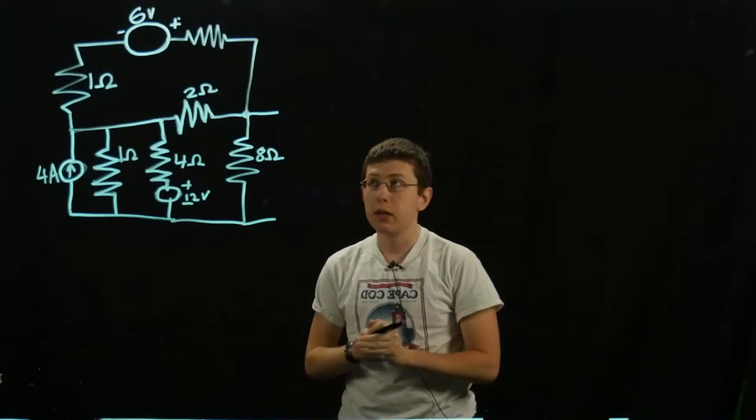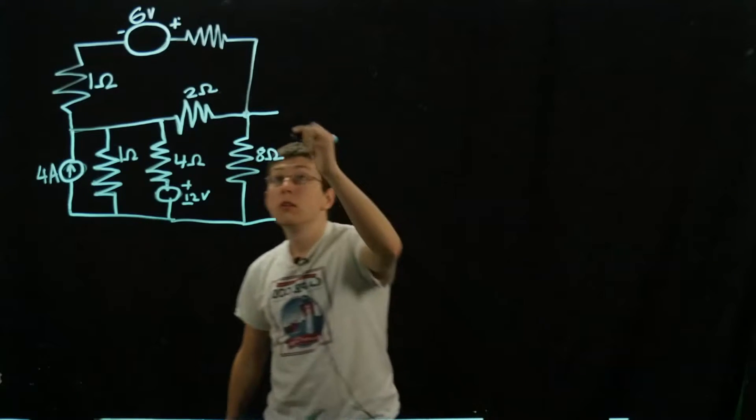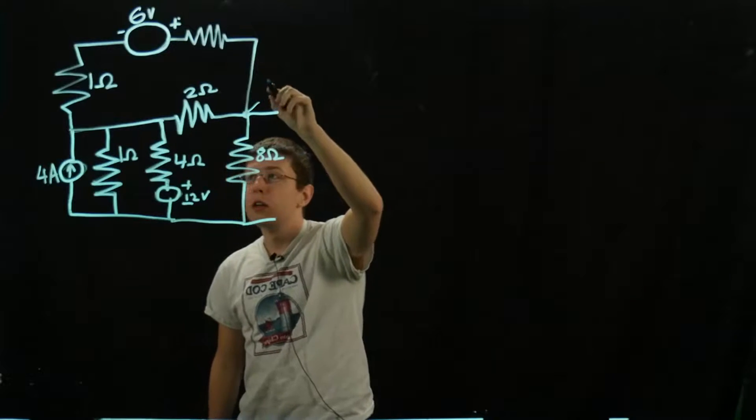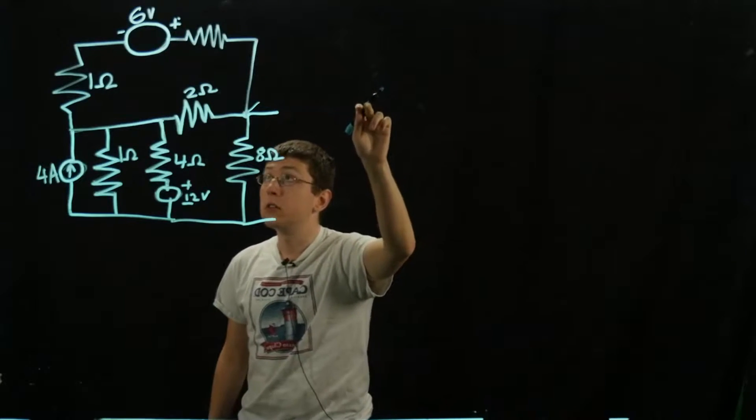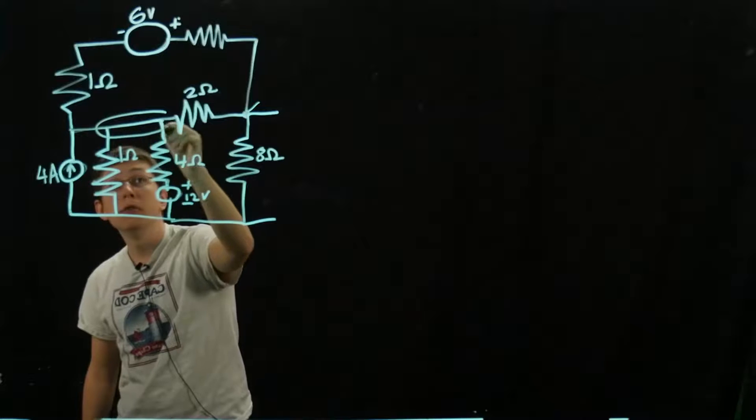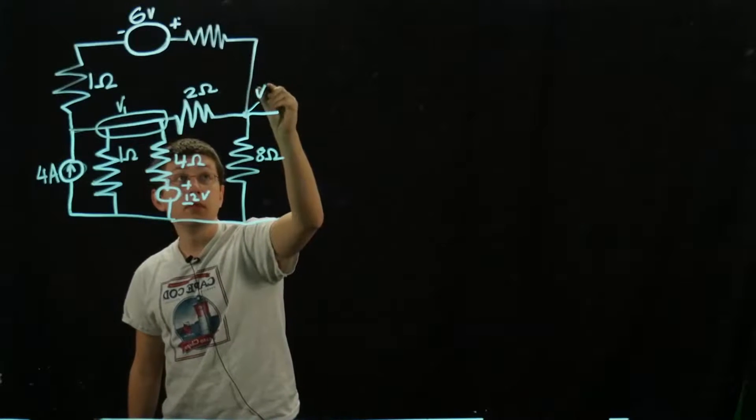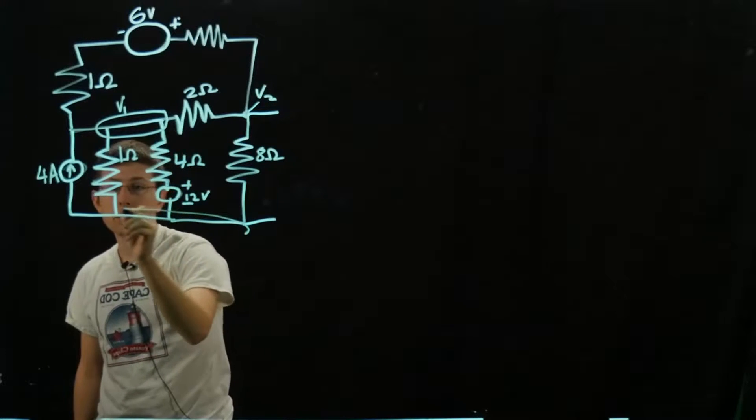We're going to start by finding the voltage right here, which we call VOC. We'll be using node voltage method to do this. I'm seeing one node right here which I'll name V1, this will be V2, and a nice big node here to be our ground.